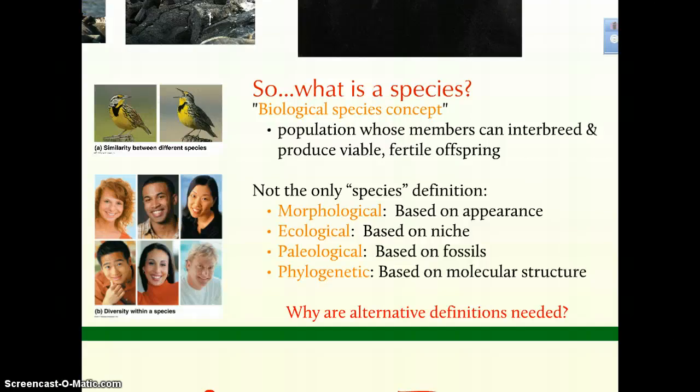How you define a species is actually somewhat tricky. If you ask someone, they may give you examples like physical features, which is certainly part of that. What your book focuses on, and what many biologists use, is the biological species concept — the idea that you have a population with similar characteristics capable of producing offspring that are themselves fertile.